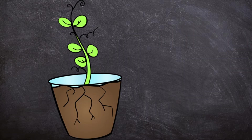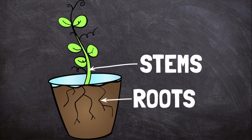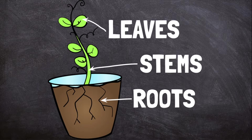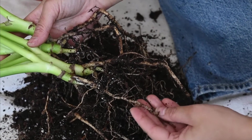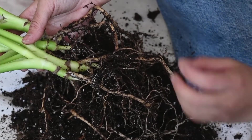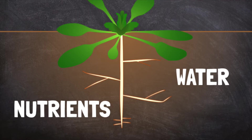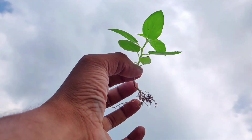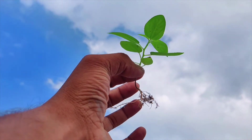The three main parts of a plant are the roots, the stems, and the leaves. The roots reach down into the ground and keep the plant in place. The most important job of the roots is to absorb water and nutrients from the soil.